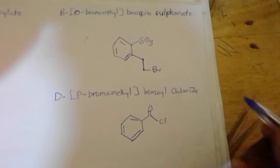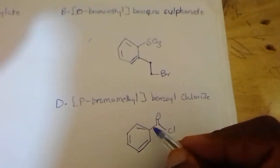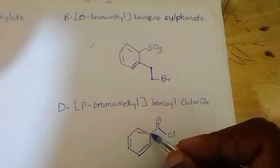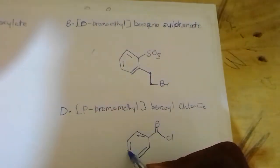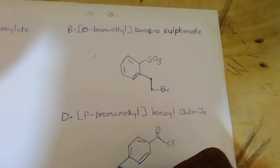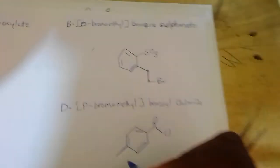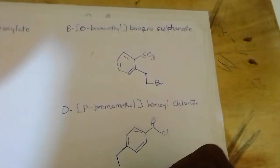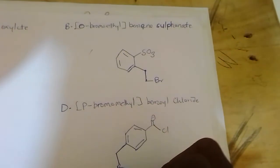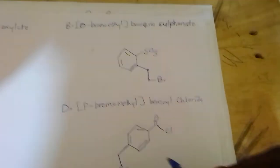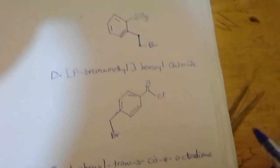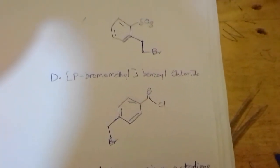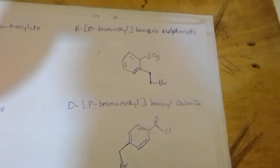At the para position we have a bromomethyl group. So the methyl will extend out from the para position, and then the bromo will be placed on it. This is P-bromo methyl benzene sulfonate.